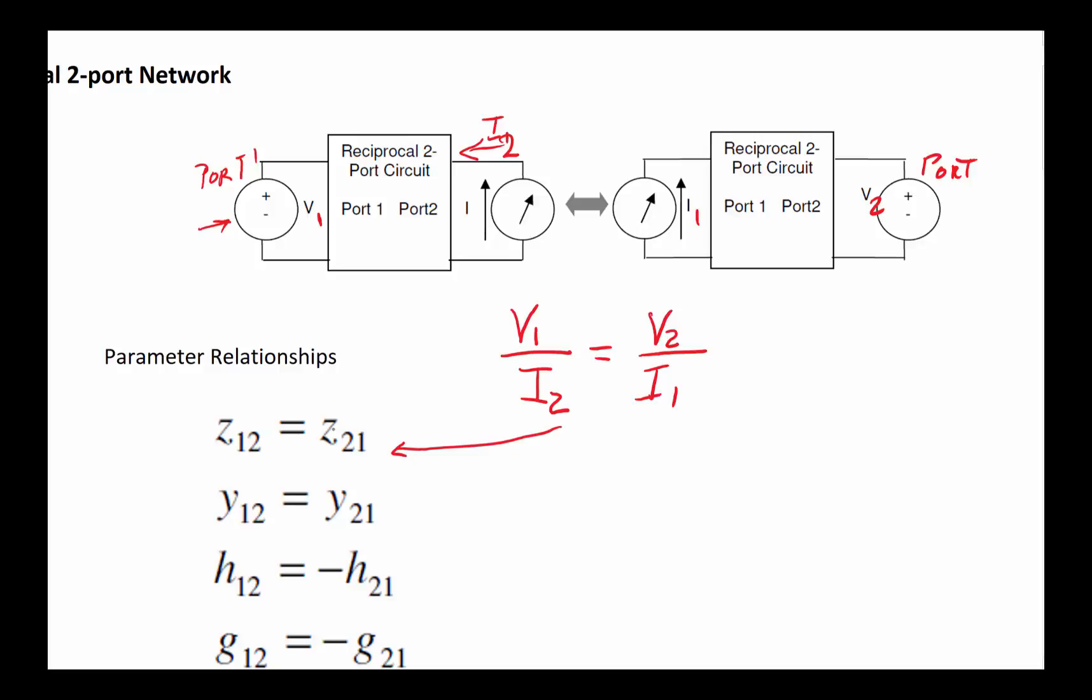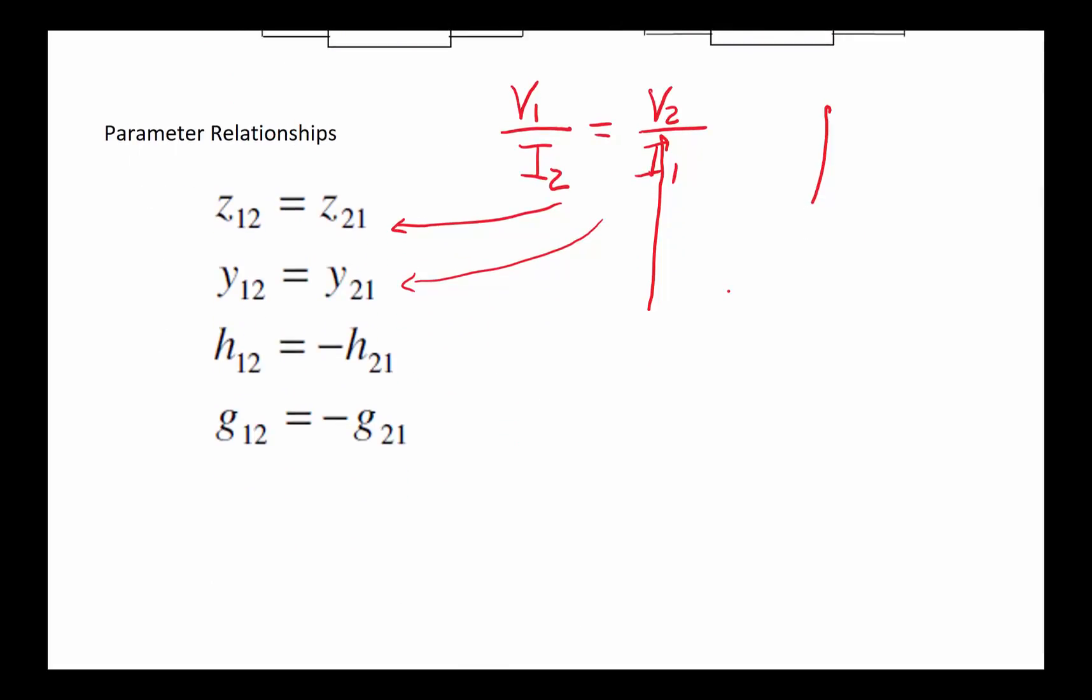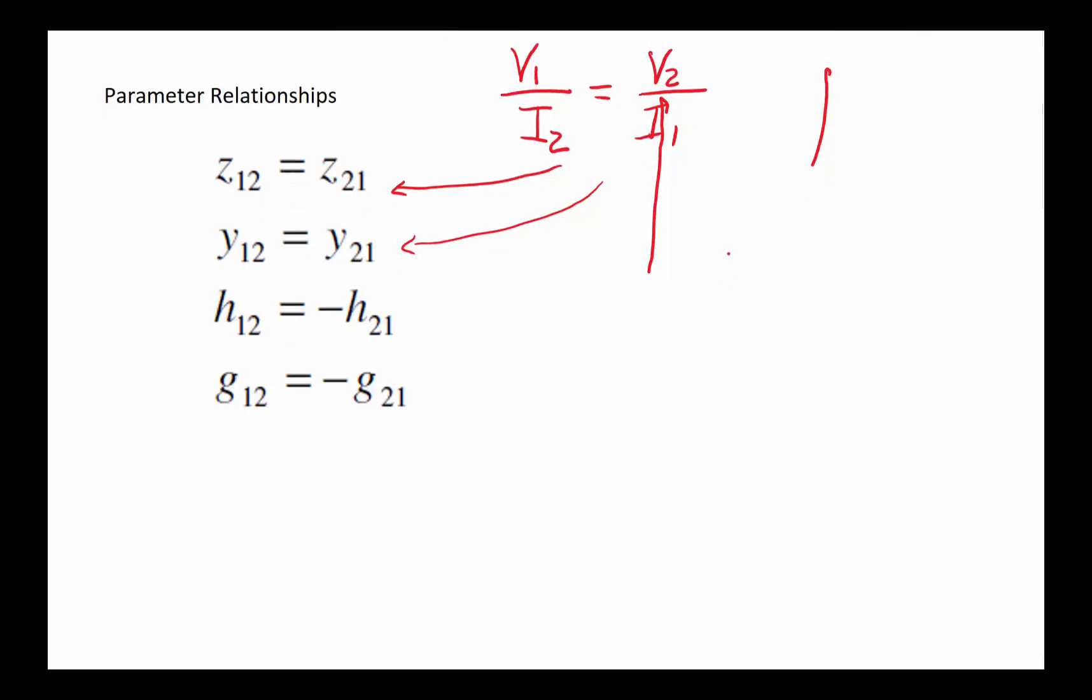As you carry this further you will find for the H parameter this relationship of H12 equal to minus H21 is true, and in the case of G, G12 equal to minus G21 is true. So reciprocal simply says if I have a voltage source and a current source and I flip their location we still get the same numbers.